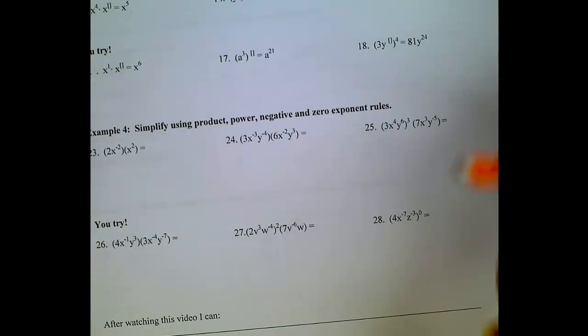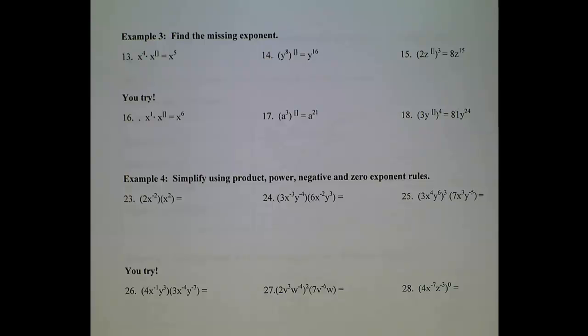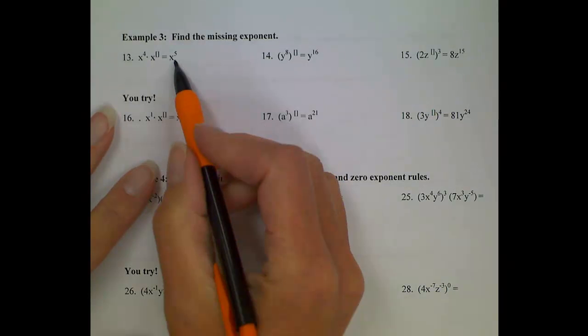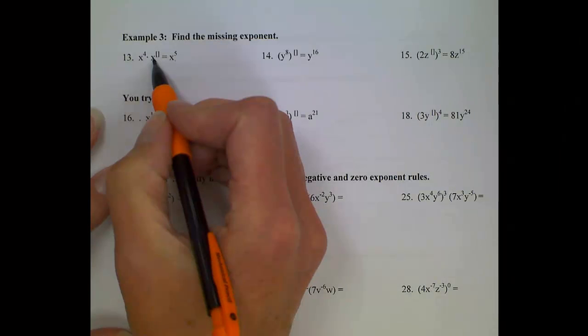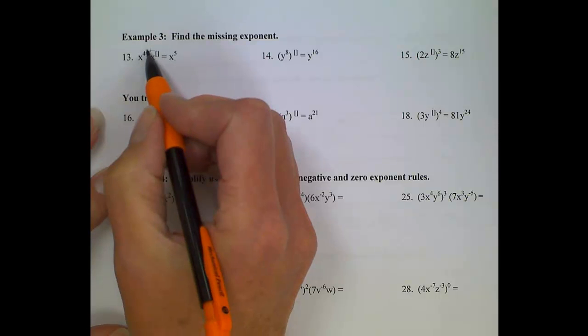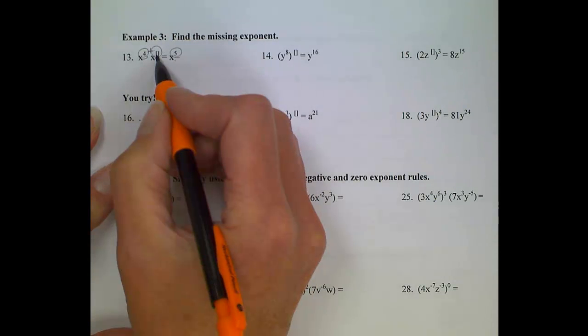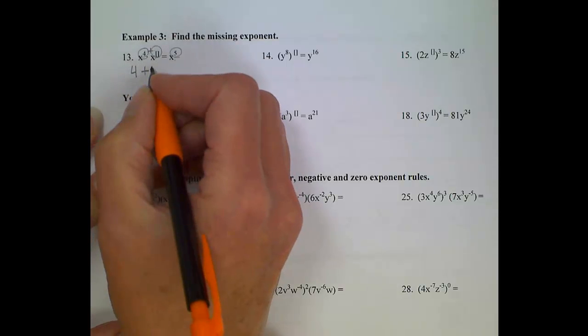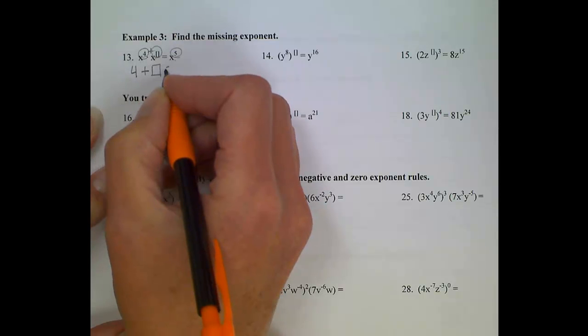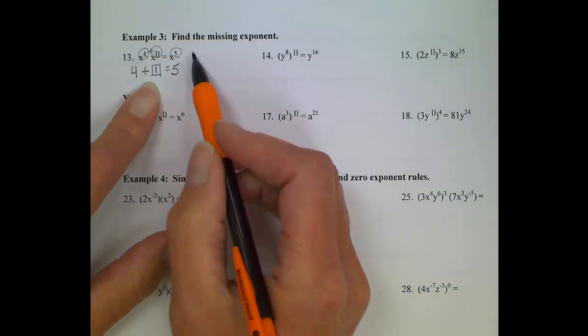Okay, sometimes they're going to want to assess and see, do we really understand these rules? And how they're going to go about doing that is saying, here's the answer, this is part of the problem, what was the other part of the problem? And if you really know your rules, these aren't too bad. Normally when we're multiplying, we do what to exponents? We're adding exponents. So if I look at this exponent, and this exponent, and this exponent, that makes this one not look so bad. If you want to set up an equation, you could. Exponent of 4 plus an exponent of, I don't know, equals 5. Well then that tells you, your missing exponent has to be 1. So even though the problem looks a little confusing at first, the math behind it is pretty easy.